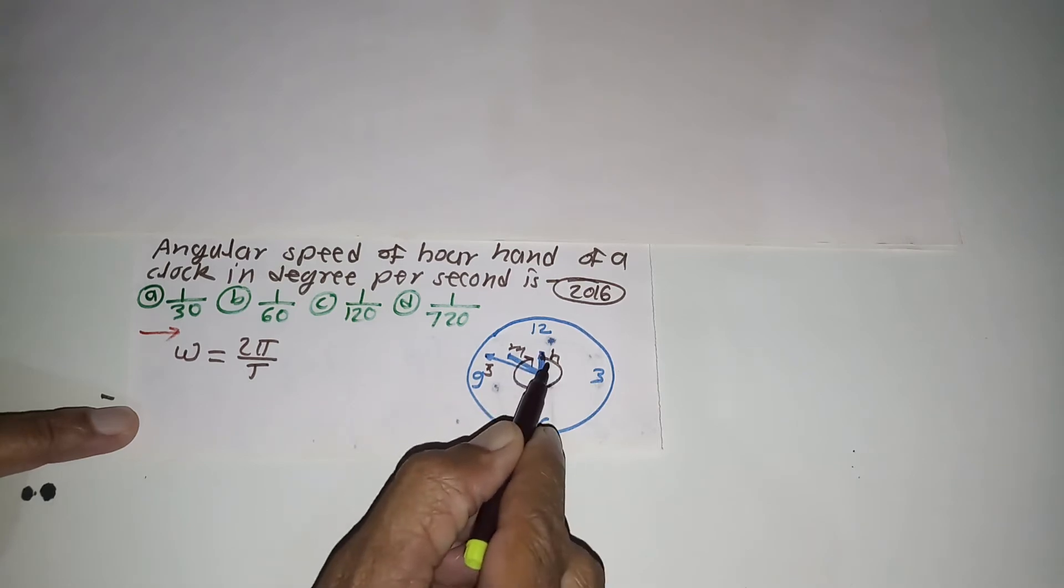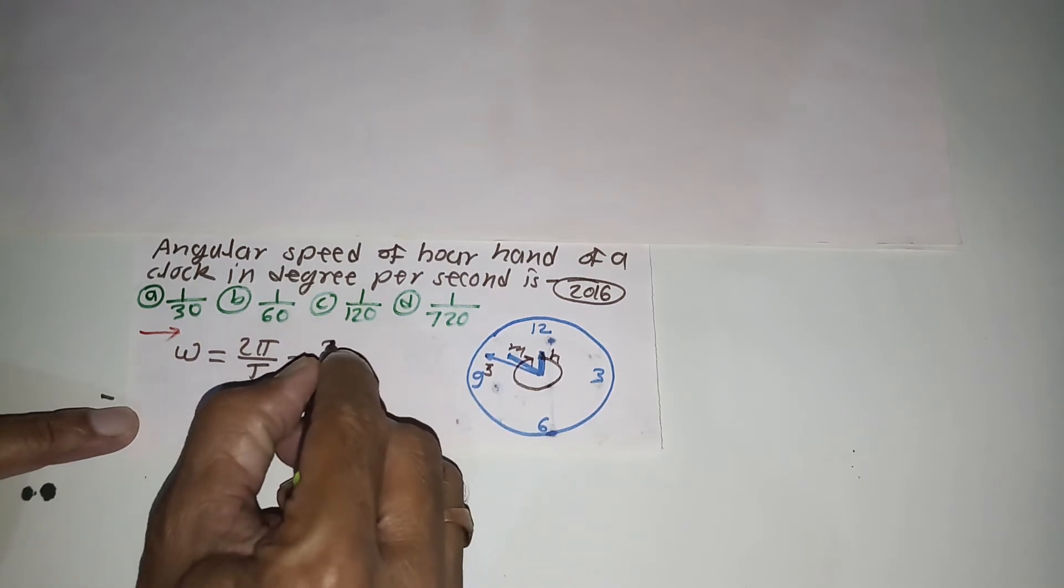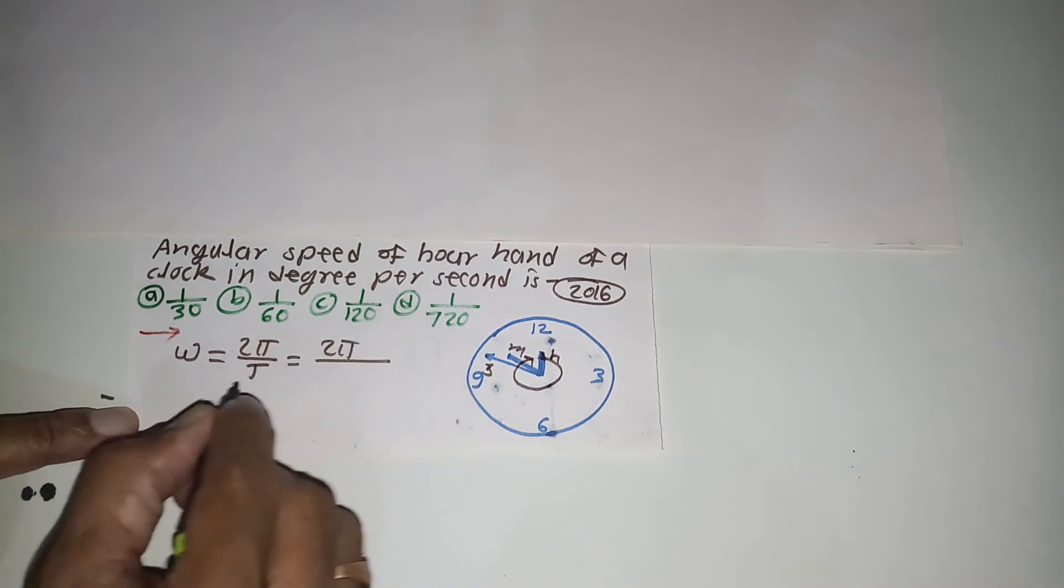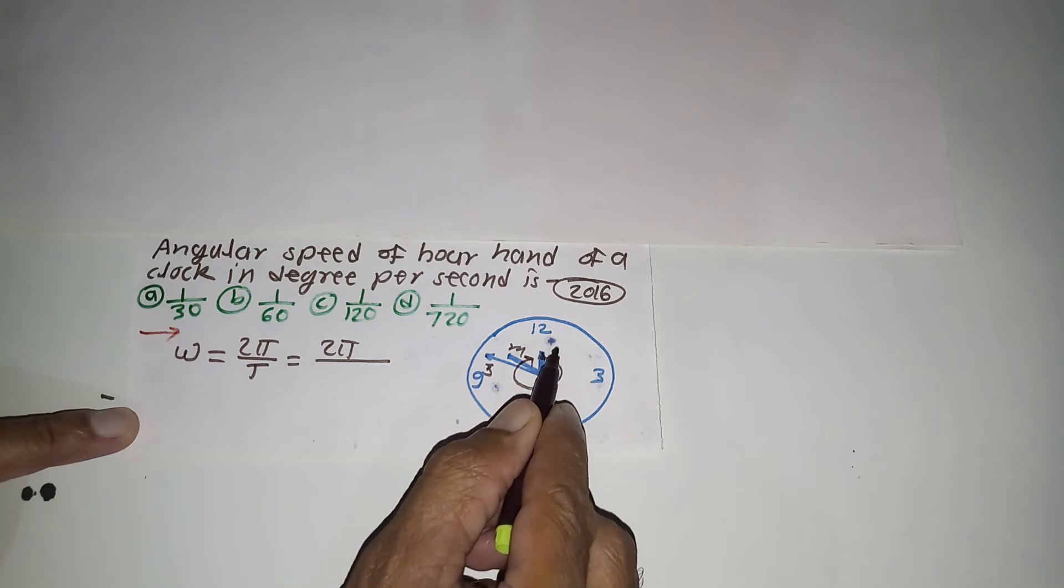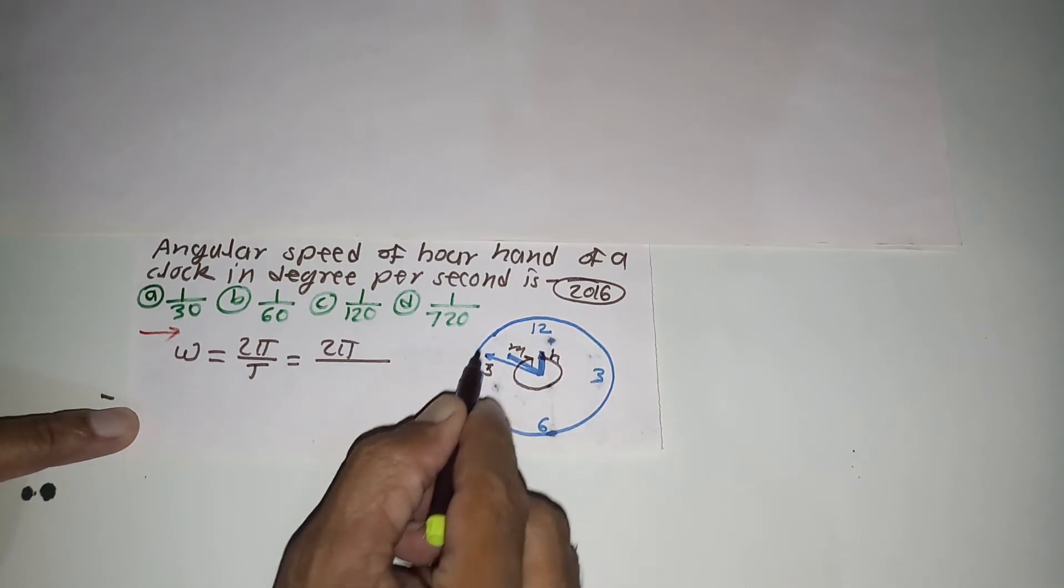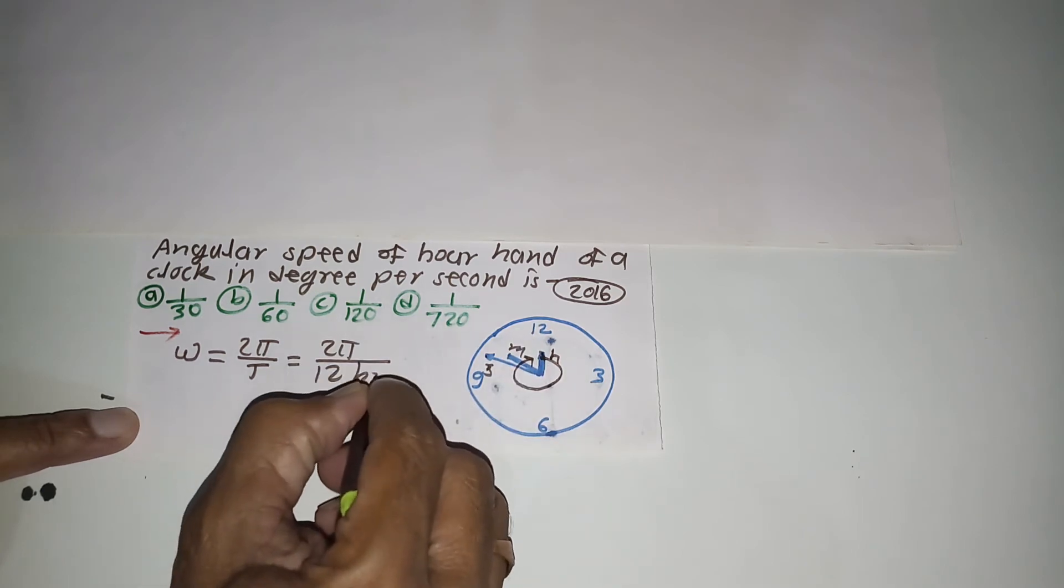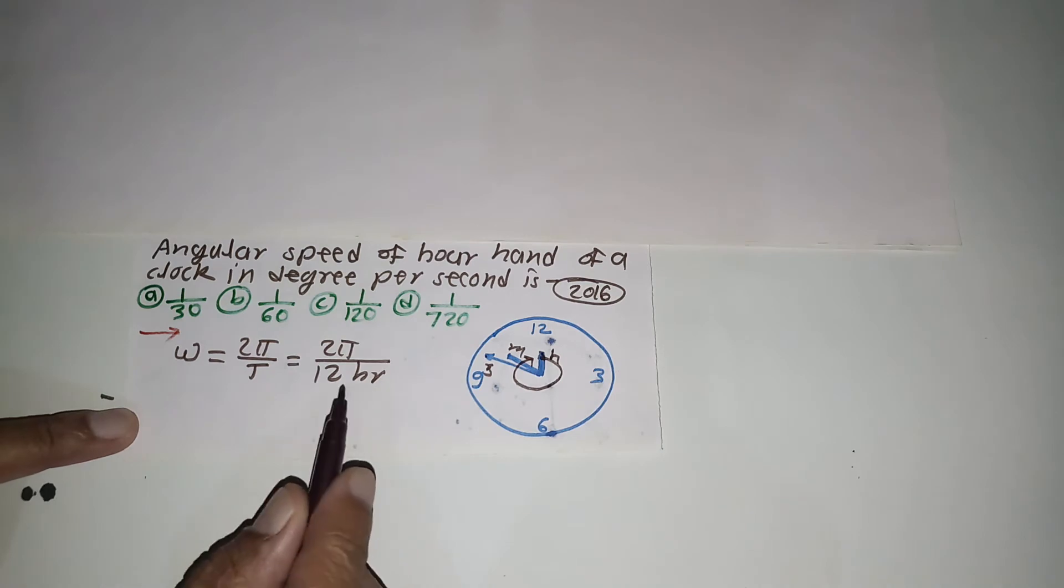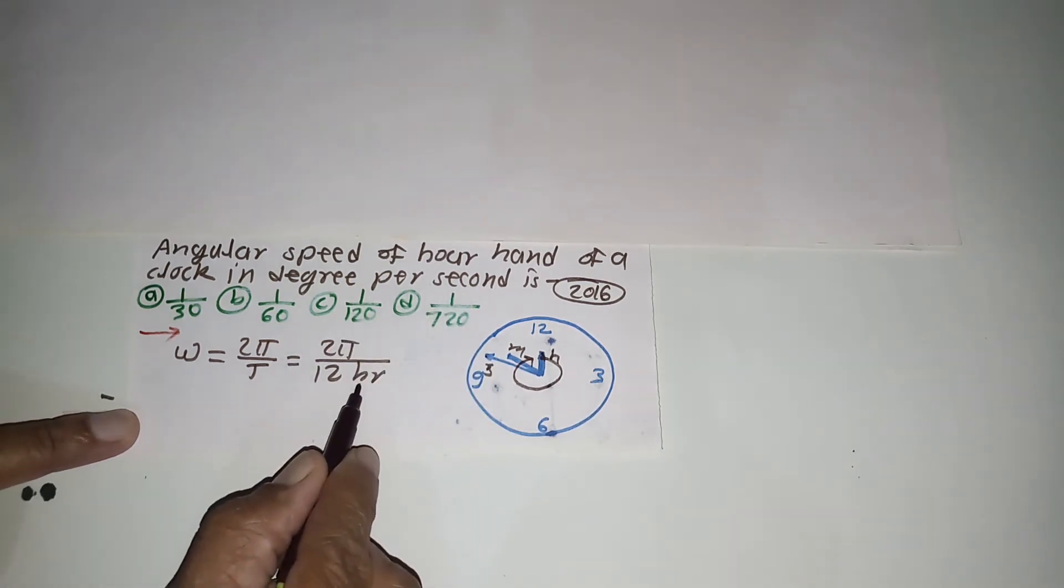For the hour hand, the time required to complete one rotation is 12 hours.